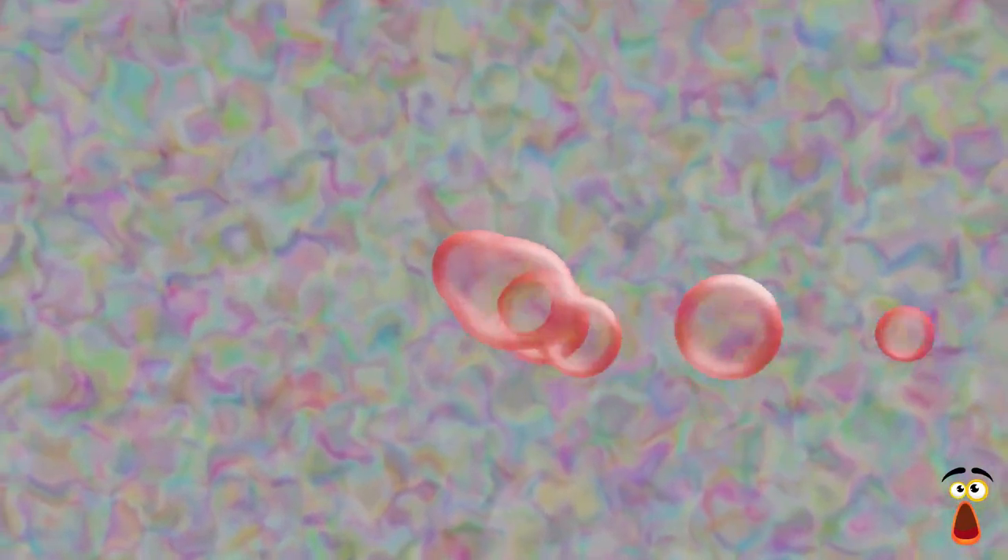The Cambrian explosion, which occurred around 541 million years ago, was another significant event in the rise of multicellular organisms. During this time, there was a rapid diversification of life forms, resulting in the emergence of many of the major animal phyla that exist today. The evolution of multicellular organisms allowed for the development of more complex ecological systems, with organisms occupying different niches and interacting in a multitude of ways. This diversity of life forms and interactions has allowed for the creation of the complex ecosystems we see today.